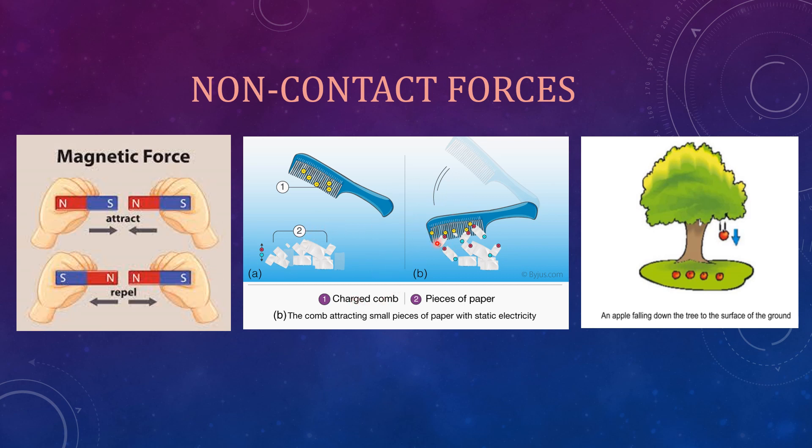This is the example of electrostatic force. The force exerted by a charged body on other charged or uncharged body is called electrostatic force. In this, comb and papers are there. We just apply the comb on our hair or rub it on the piece of paper. It is electrically charged and the papers are not charged. If we bring the comb near to papers, it attracts the papers towards it.